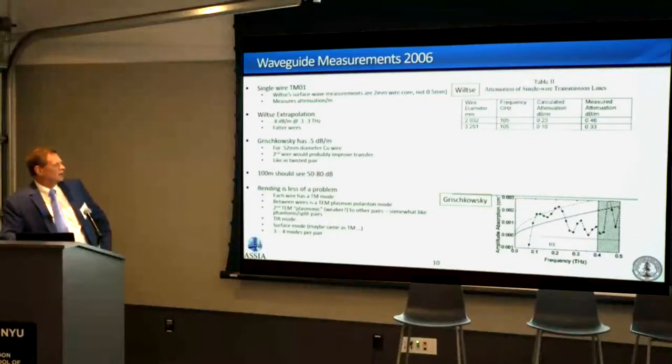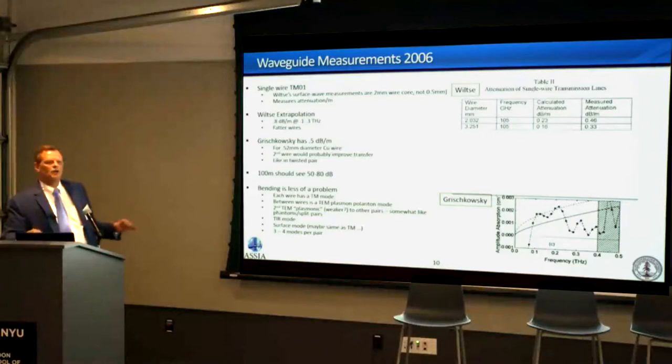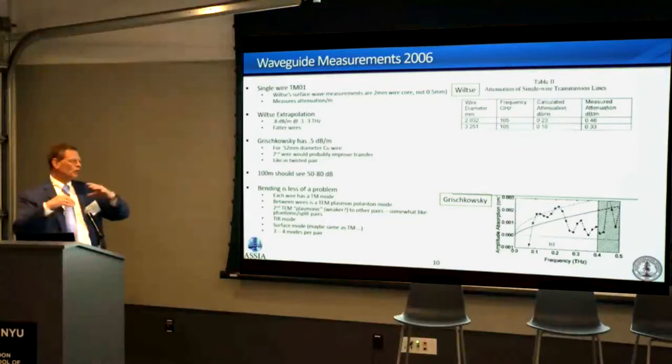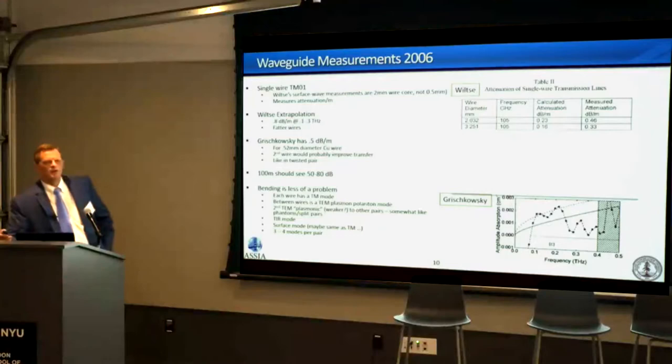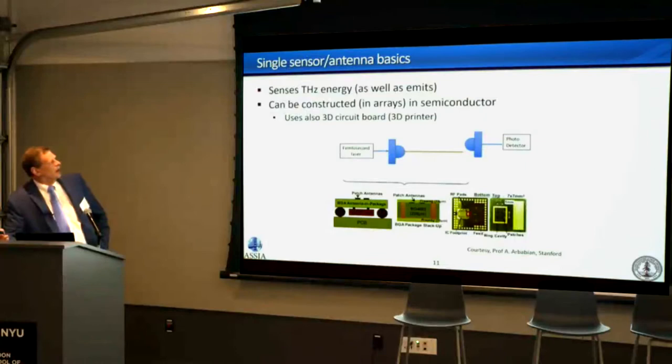Bending of a wire is less of a problem when you have multiple wires, because there will be reflections between them. With modern MIMO techniques, that's not necessarily bad — in fact it's a good thing. As long as the energy is not escaping the cable but being reflected back, it can be recovered and aligned if the transmitter and receiver signal processing are doing the right thing. There could be up to three or four modes per twisted pair sustaining data transmission.